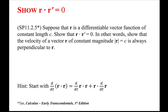Suppose that r vector is a differentiable vector function of constant length c. Show that r dot r prime equals zero. In other words, show that the velocity of a vector r of constant magnitude is always perpendicular to r.